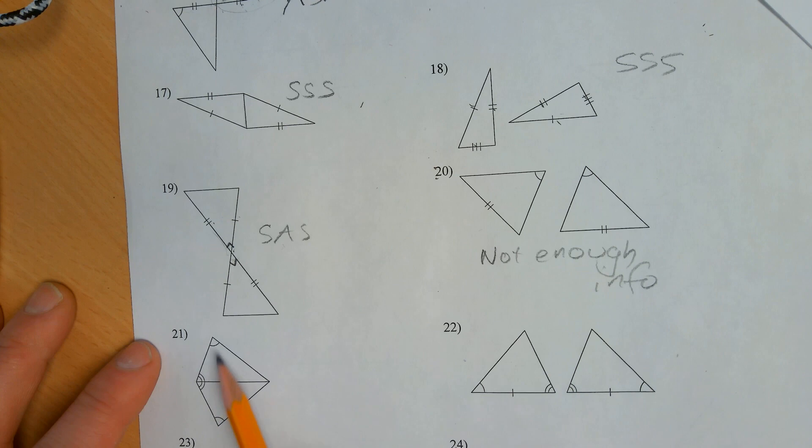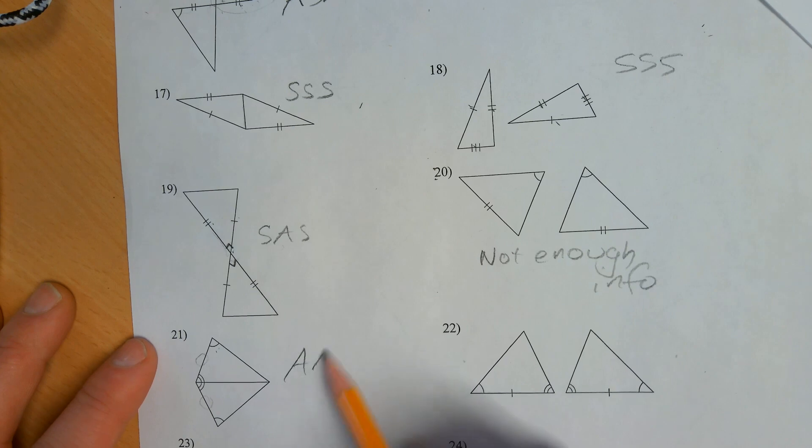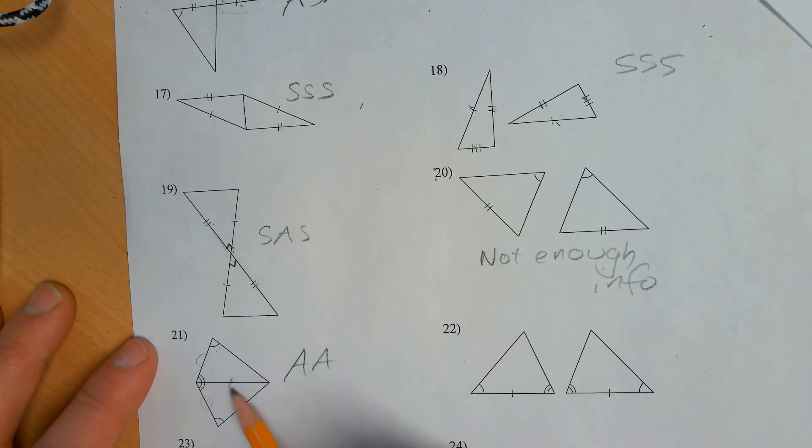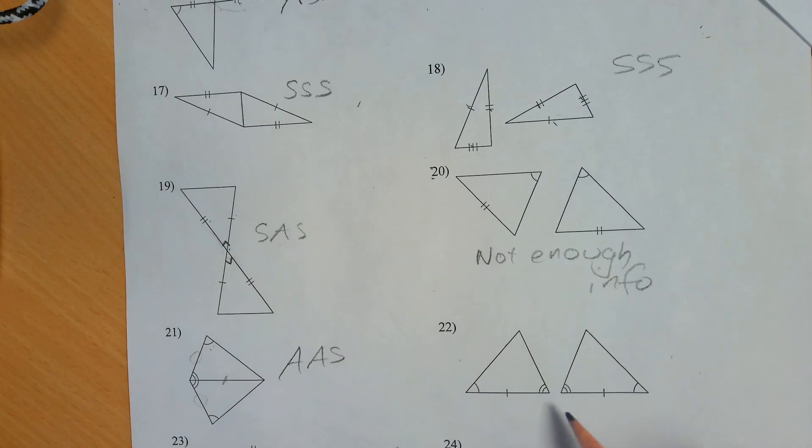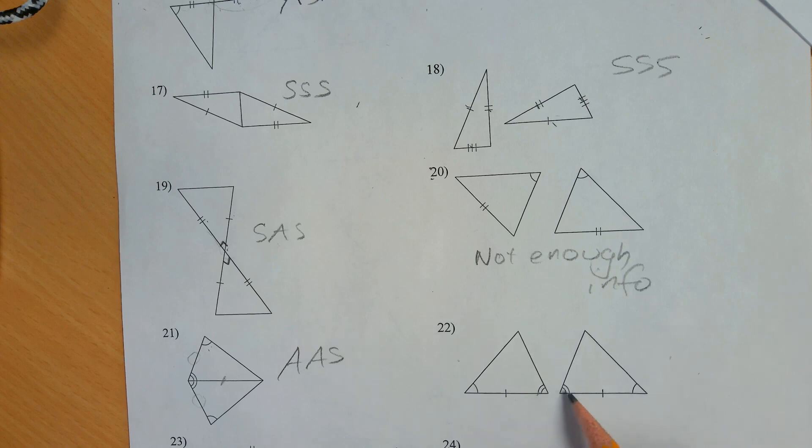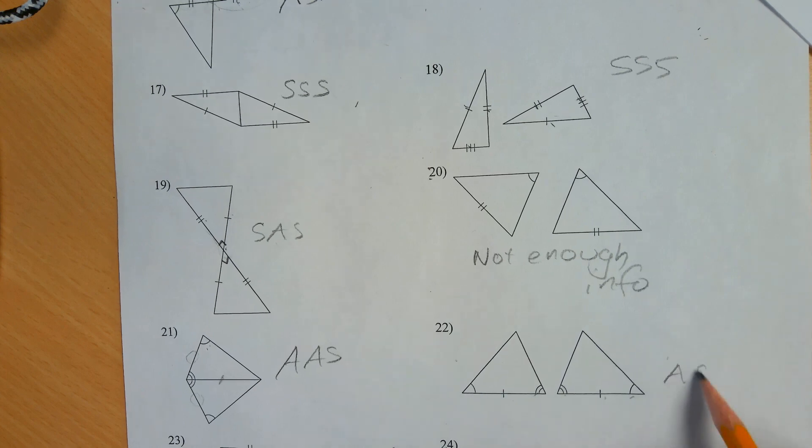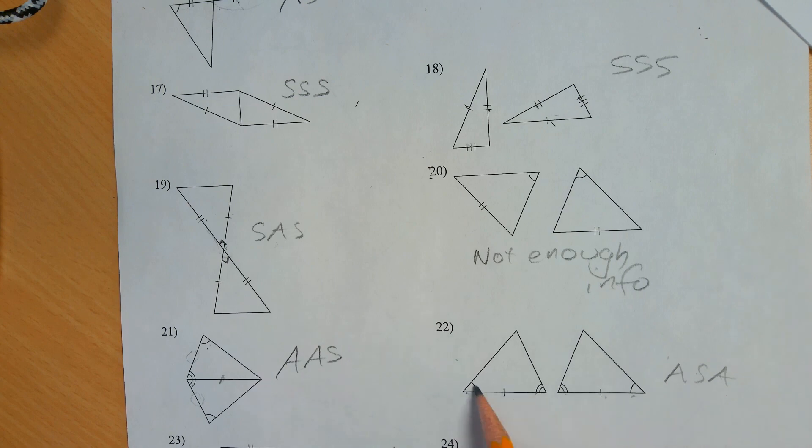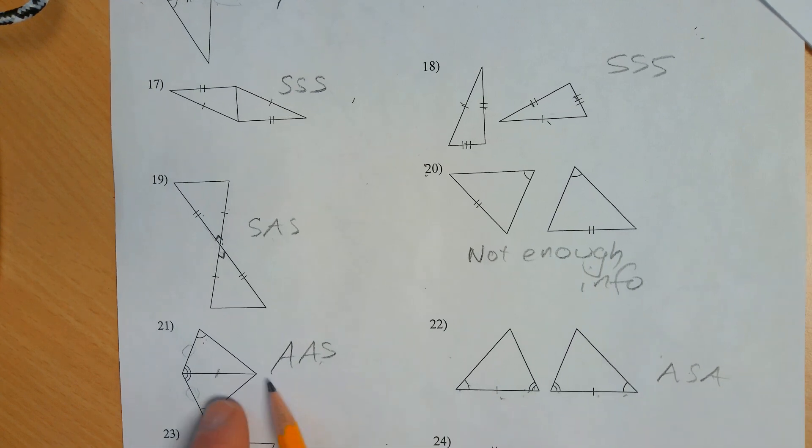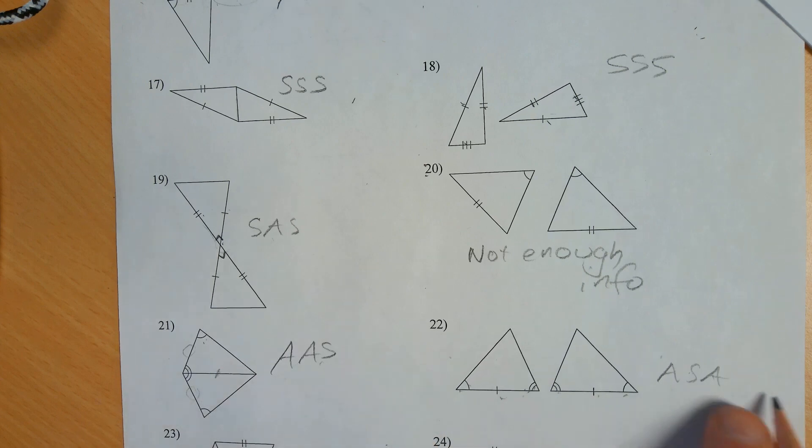Alright, so here we have two angles. Do we have the side in between them marked? No. So it's two angles and some other side. We do have some other side though, this secret side. Angle, side, angle, angle, side, angle. Or looked at it differently. We have two angles. Do we have the side in between them? Or do we have some other side? In this case it was the side that's in between them.